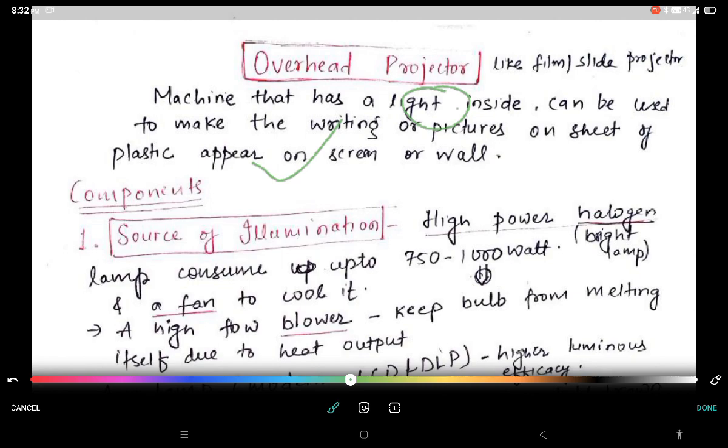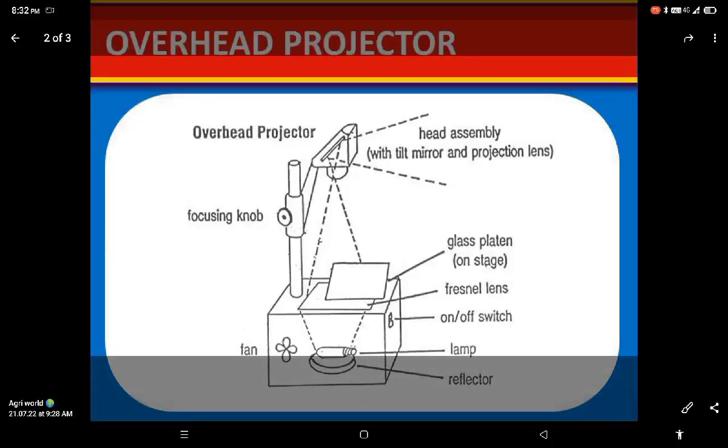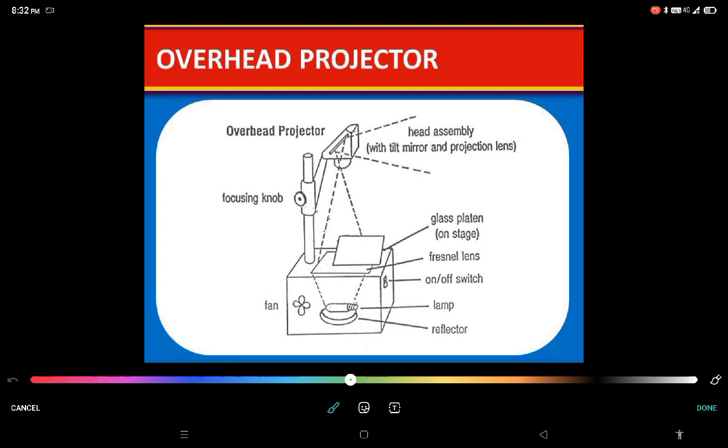So see, this is overhead projector. This is lamp - halogen lamp, mainly halogen lamp is placed here - and here is fan or blower can be placed. This is Fresnel lens, this is in the background, and this is transparent.